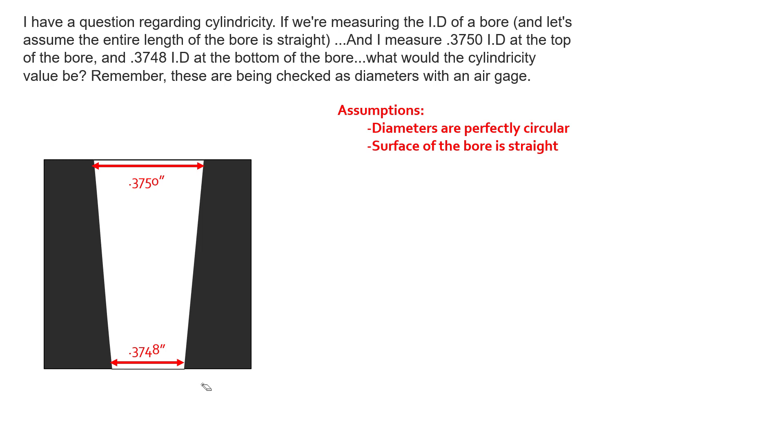And now remember, cylindricity is the distance between two concentric cylinders. And the radial distance between those two cylinders is the cylindricity error. So if we were to fit two concentric cylinders, or coaxial cylinders, and we were to shrink the largest cylinder until we captured the largest diameter of our surface,